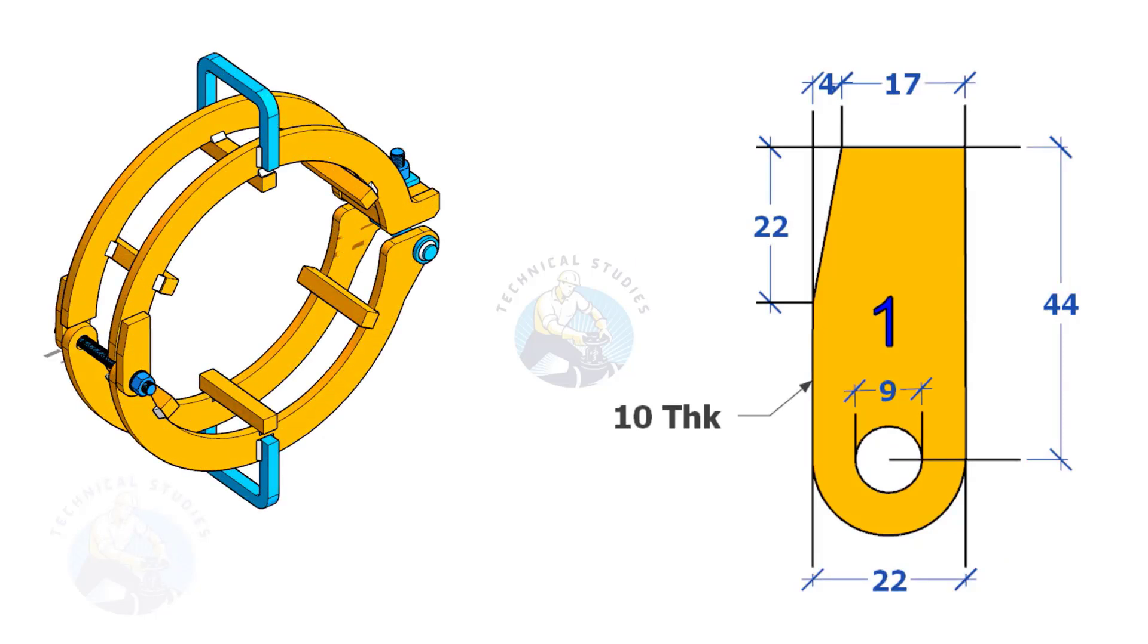Up to 6-inch diameter pipes, 6 millimeters thick plate is enough for all items, except the 20 by 20 square bar. 8-inch to 12-inch pipe, use 8 millimeters thick plate. Above 12-inch, you may need to use 10 to 12 millimeters thick plates.